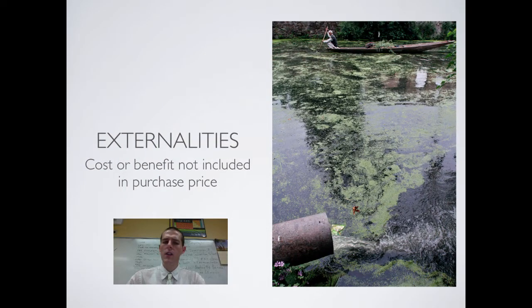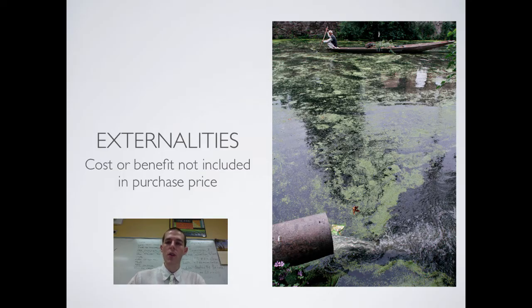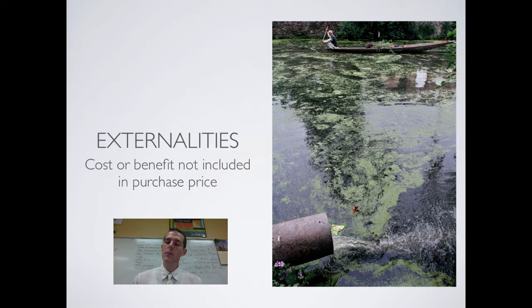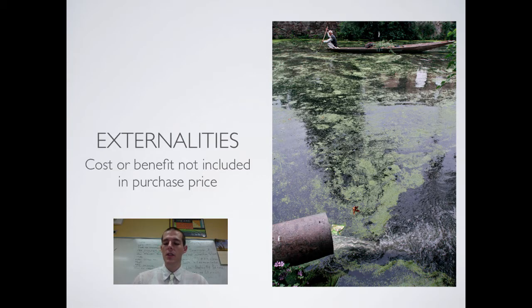The next idea is externalities. Technically defined, an externality is a cost or benefit not included in the purchase price. For example, manufacturing your clothes might produce pollution or environmental damage in another part of the world. You're not paying for that pollution — it's happening somewhere else while you're buying your shirt. Externalities link the idea that producing or manufacturing things damages the environment, but that environmental damage is not included in the purchase price. It would be interesting to see how much that would change consumer behavior if that damage were included.